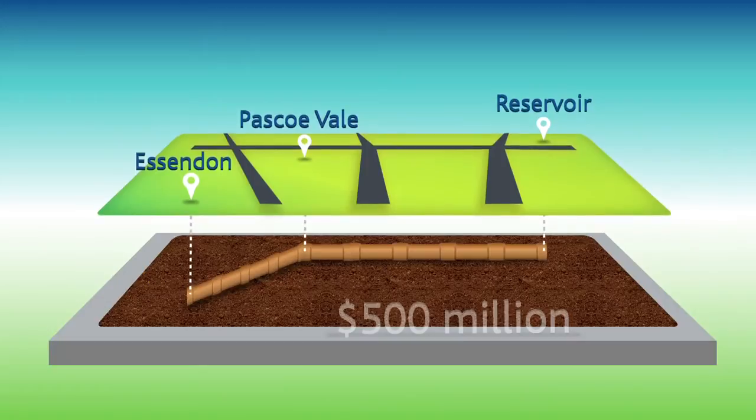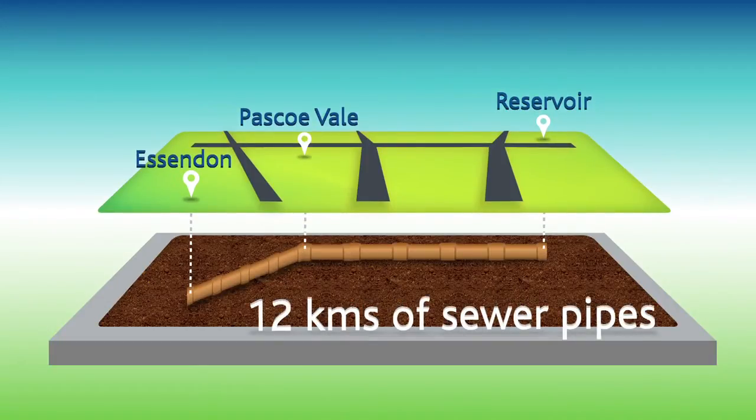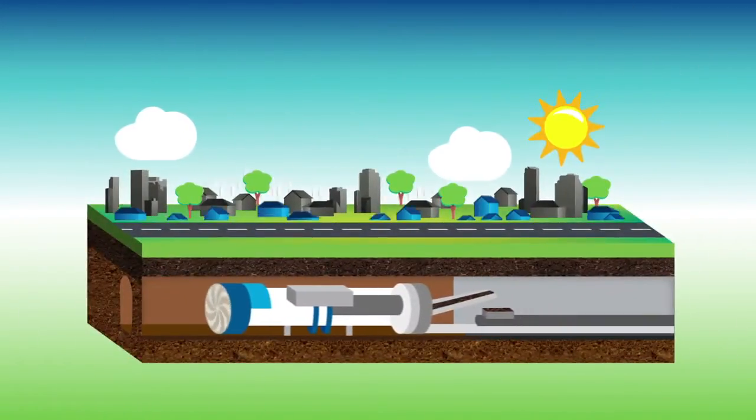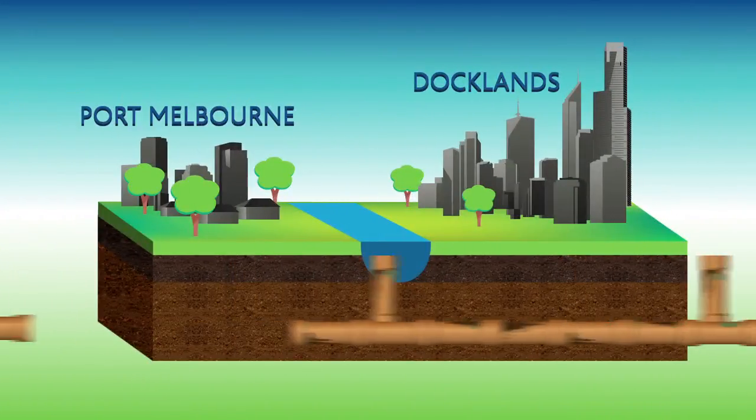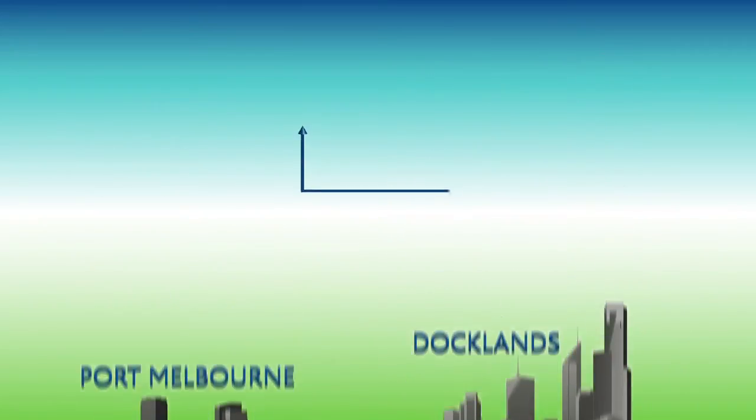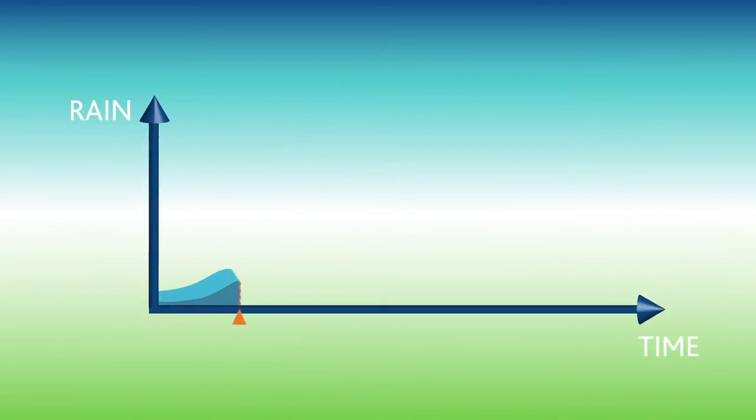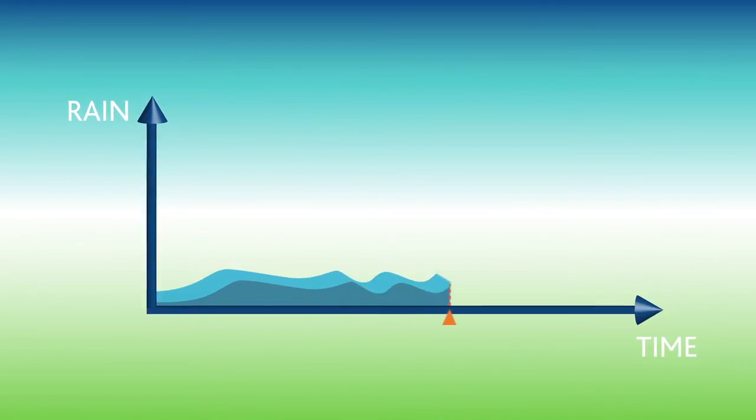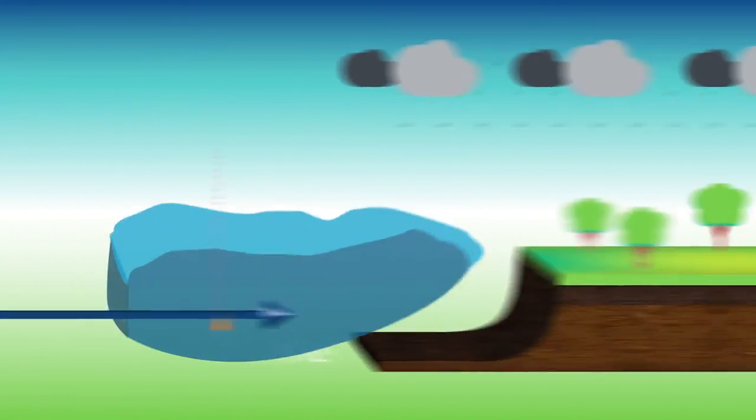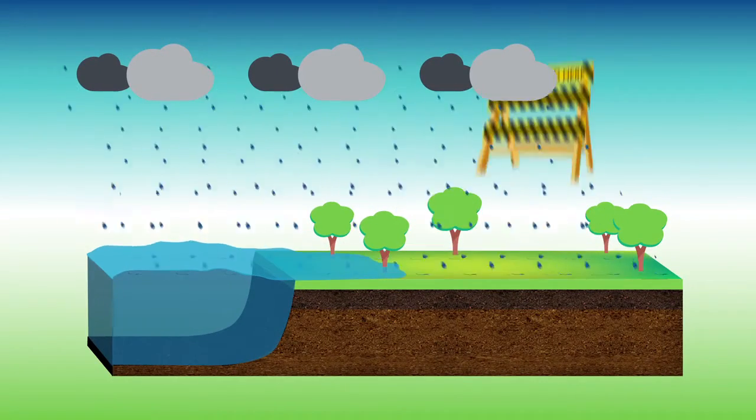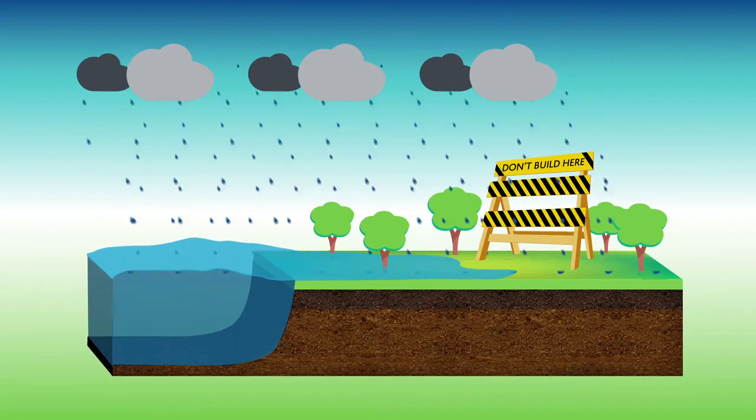But can anything else be done? Significant investment has been made in recent times to increase the capacity of the system and cater for growth, and to upgrade ageing infrastructure. We're also investigating ways to determine the impact of droughts, floods and changing weather patterns on our sewage and drainage systems, and identifying adjustments that may need to be made.